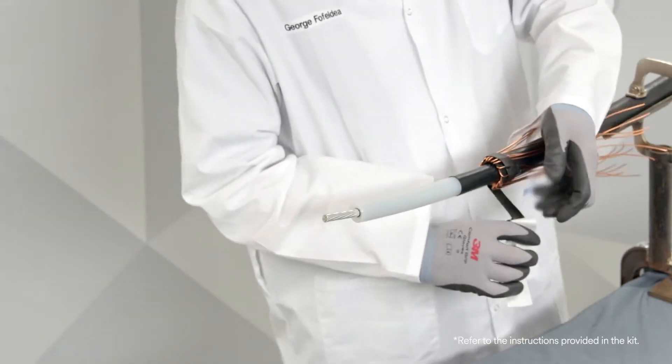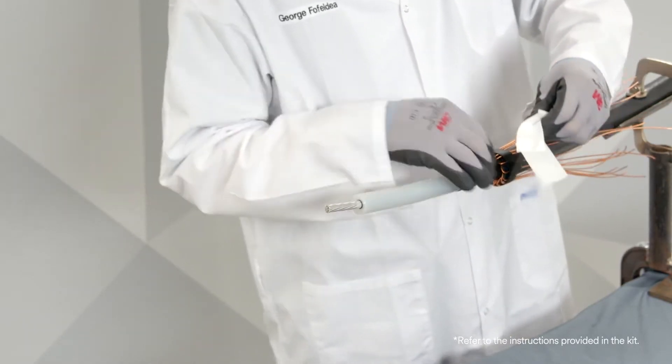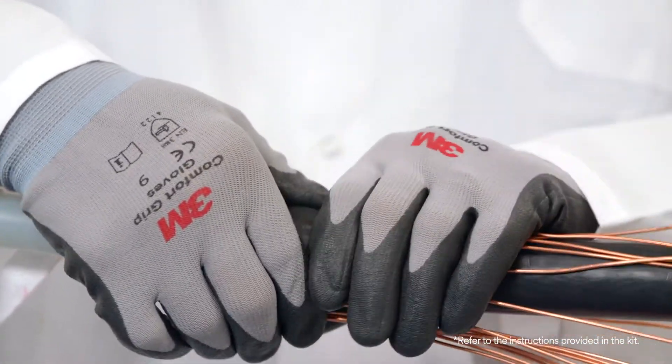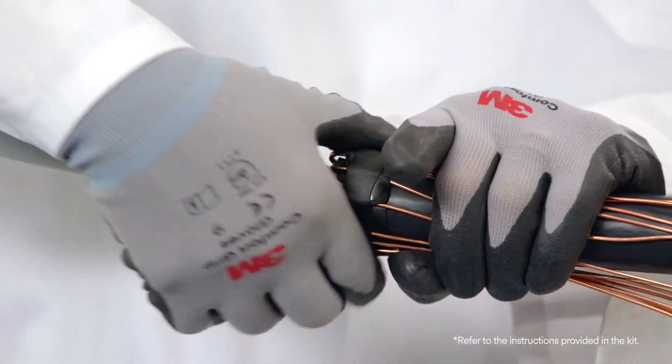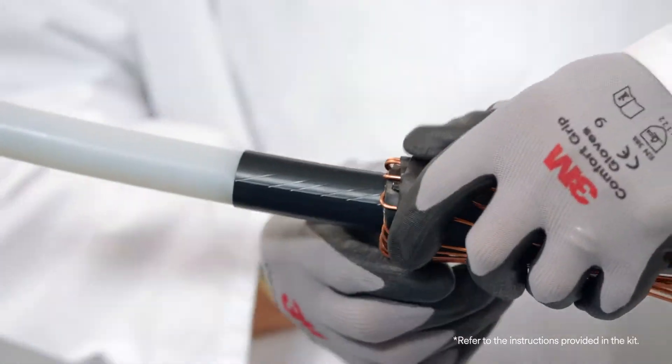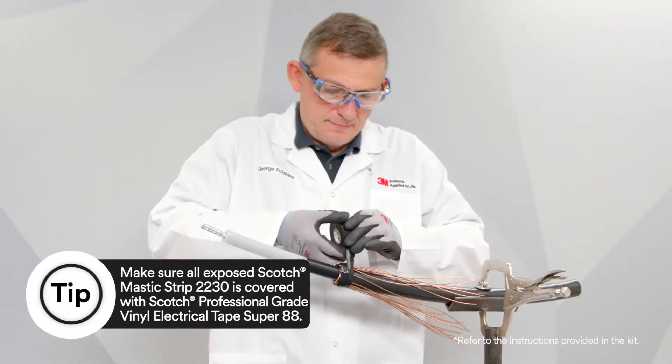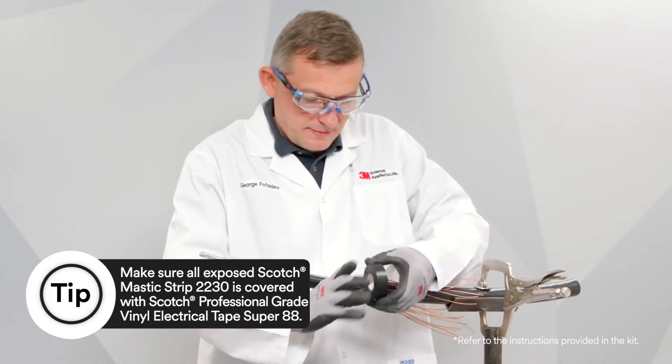Now apply a single wrap of the Scotch Mastic Strip 2230 over the neutral wires and then compress neutral wires into Scotch Mastic Strip 2230 by overwrapping seal strips with two highly stretched layers of Scotch Professional Grade Vinyl Electrical Tape Super 88.